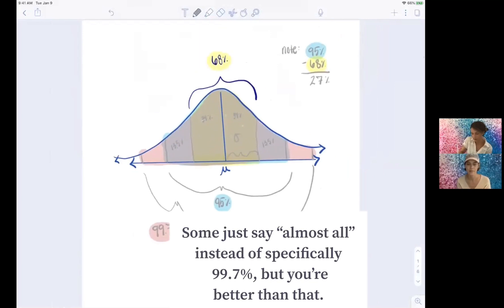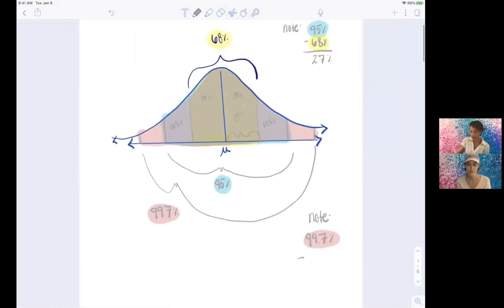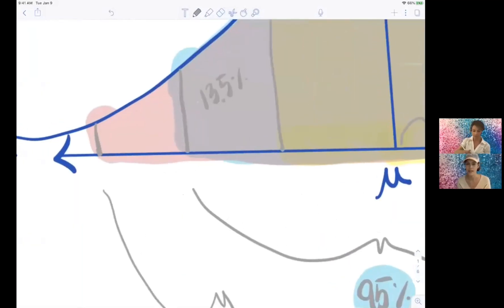99.7 percent, take off the amount we've already accounted for, so the 95 percent. So that gives us 4.7 percent, and so if we split that in two, then we're going to have 2.35 percent in each area there.